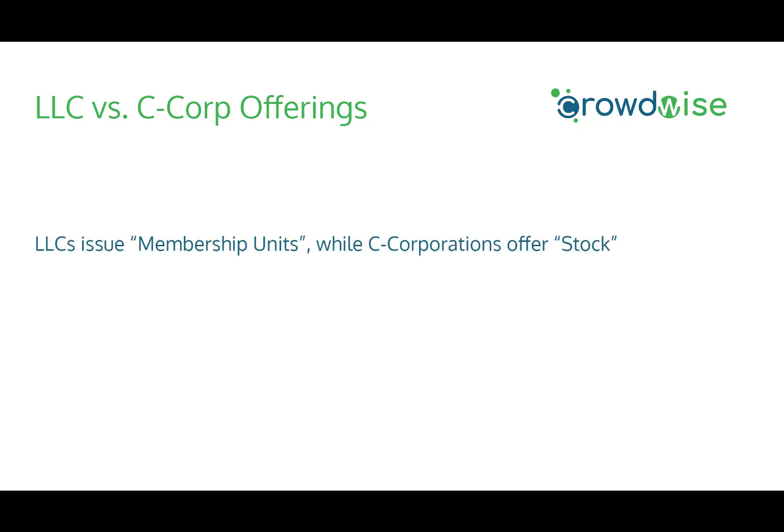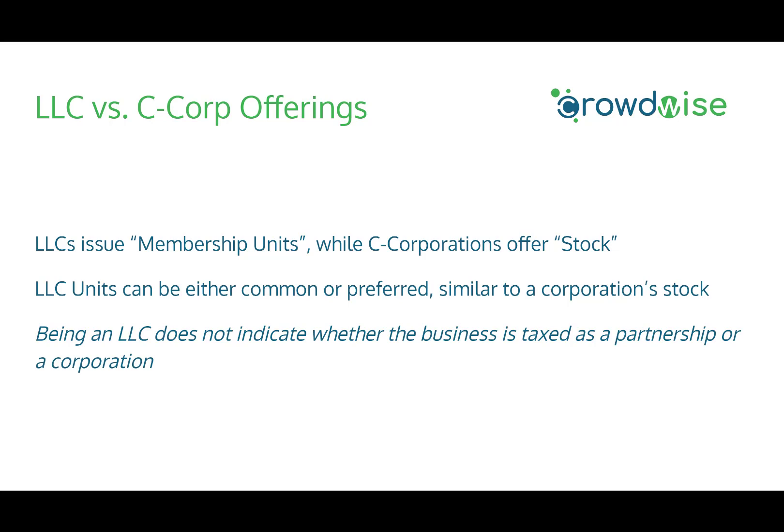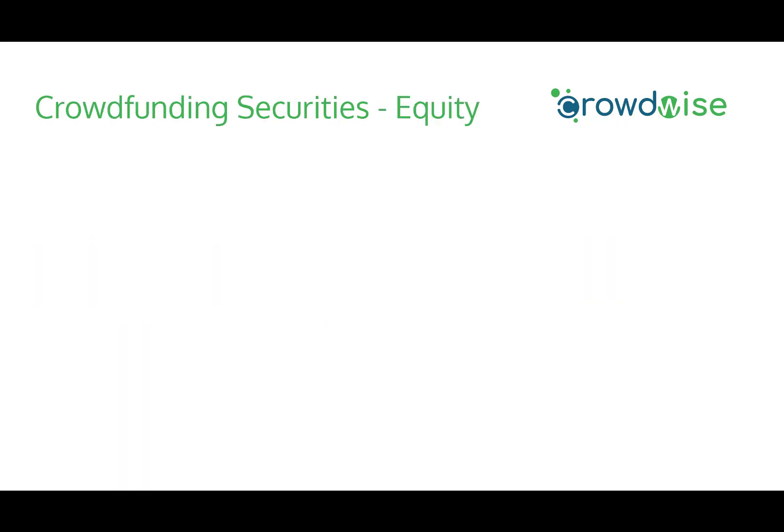As we discussed last time in terms of tax implications of LLCs versus C corporations: an LLC will issue membership units or interests, while C corporations offer shares or stock. LLC units can still be classified as common or preferred, similar to stock in a corporation. You should understand that being an LLC does not indicate whether the business is taxed as a partnership or a corporation. Contact the founder or check the Q&A section of the campaign page to see if they mention Schedule K-1s or being taxed as a corporation.